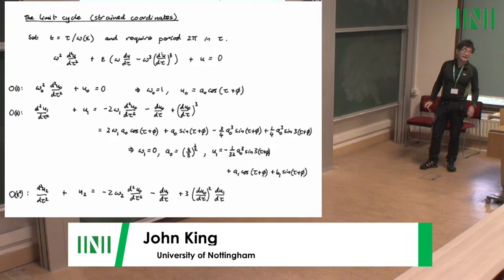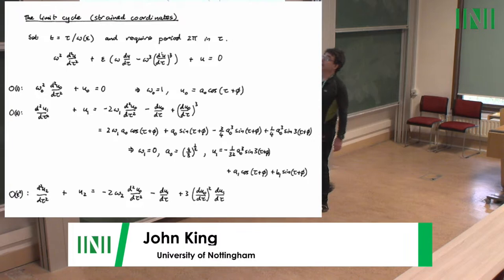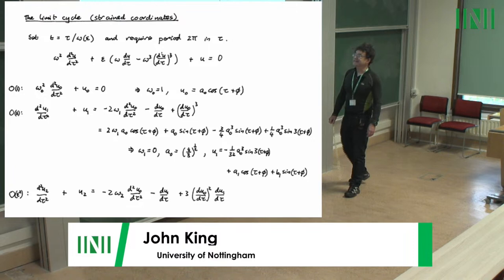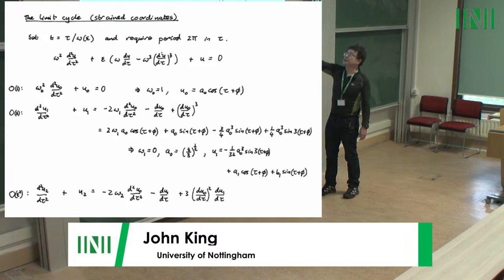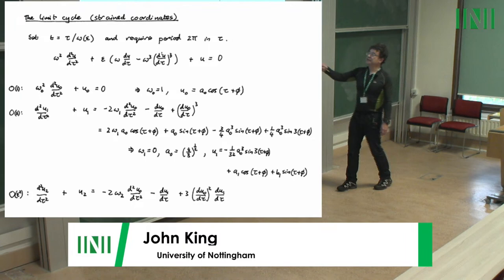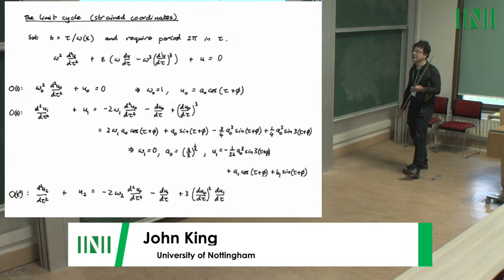The technique to fix this is strained coordinates — also called Lighthill's method, since Lighthill like Stokes was a Lucasian Professor, giving a historical link to the Stokes phenomenon. You want to get the period right, and the period depends on epsilon. A constant rescaling of t to give tau pulls down an omega multiplying the derivatives. At leading order you prescribe the period to be 2π — that choice gives omega-naught equals one. At next order two secular term types appear: the cosine term is associated with the change in period, the sine with the change in amplitude; both are resonant and must be killed.